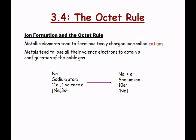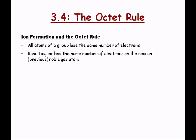Ion formation and the octet rule: all atoms of a group lose the same number of electrons. All group 1 elements lose 1 electron. All group 2 elements lose 2 electrons. All group 3A elements lose 3 electrons. All group 7A elements gain 1 electron. All group 6A elements gain 2 electrons. All group 5A elements gain 3 electrons. It's a regular pattern going from negative 3 to positive 3, wrapping around the periodic table: negative 3, negative 2, negative 1, 0, 1, 2, 3.